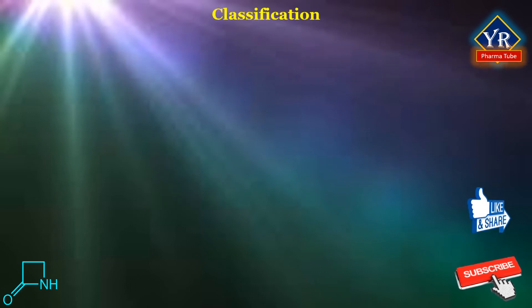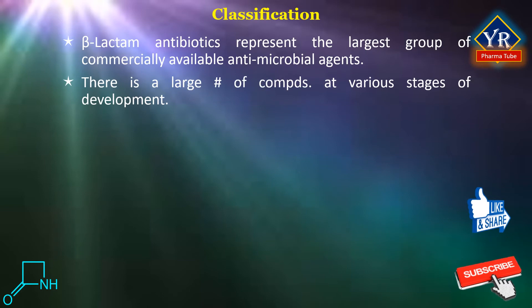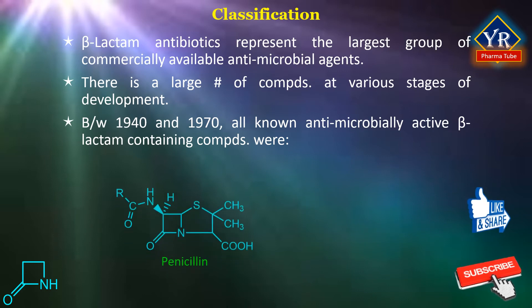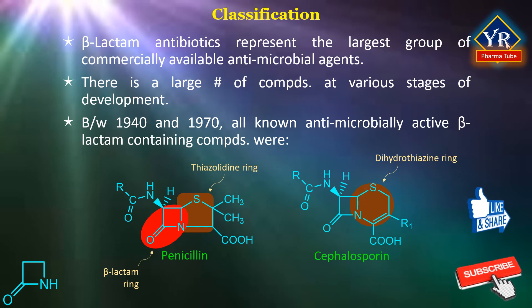Classification of beta-lactam antibiotics. Beta-lactam antibiotics represent the largest group of commercially available antimicrobial agents, and there is a large number of compounds at various stages of development. Between 1940 and 1970, all known antimicrobially active beta-lactam containing compounds were divided into two chemical types, namely penicillins and cephalosporins. The penicillins contain a beta-lactam ring fused to a thiazolidine ring, whereas the cephalosporins have the beta-lactam fused to a dihydrothiazine ring. These are referred to as the classic beta-lactams.